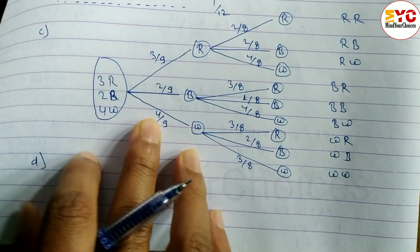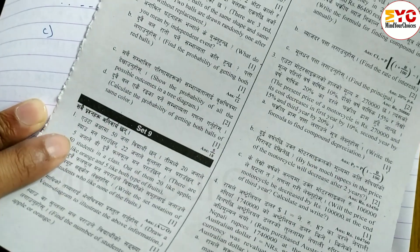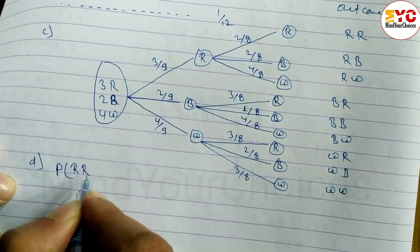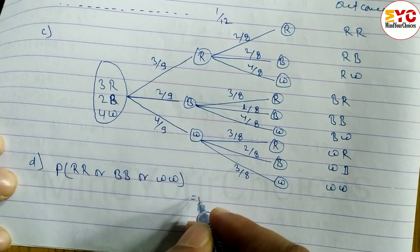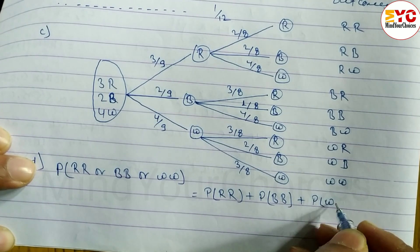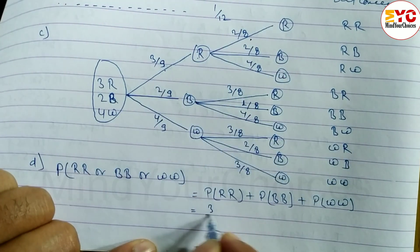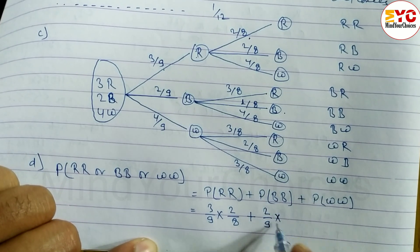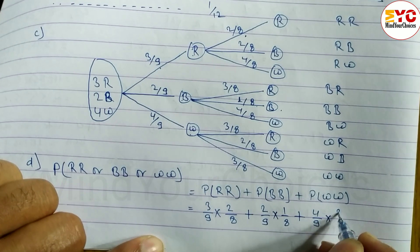For Question D, we calculate the probability of getting both balls of the same color — same color meaning red-red, black-black, or white-white. So P(same color) = P(RR) + P(BB) + P(WW). Substituting: P(RR) = 3/9 × 2/8, P(BB) = 2/9 × 1/8, P(WW) = 4/9 × 3/8.